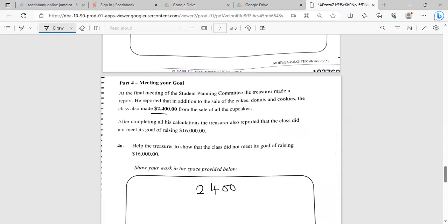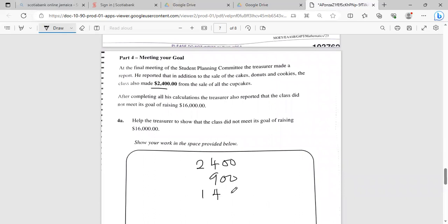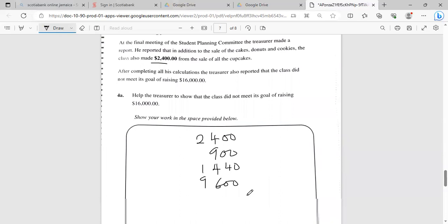Let's move on to part four. It says at the final meeting, the student planning committee Richard made a report. He reported that in addition to the sale of the cakes, donuts, and cookies, the class also made $2,400 from the sale of cupcakes. So that's $2,400. After completing the calculation, one was $900, one was $144, and one was $9,600. Let's add these are all of the sales. That would give you 4, 6, and 4 is 10, 19, and that gives you 23, nine and one is 10, 12, 14. So that's $14,340.